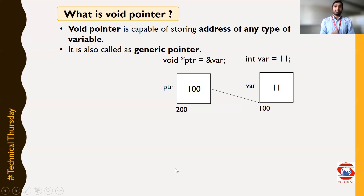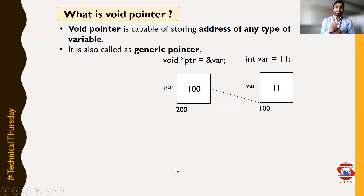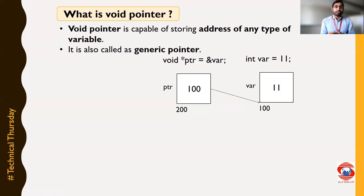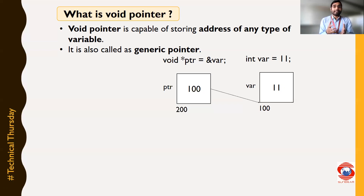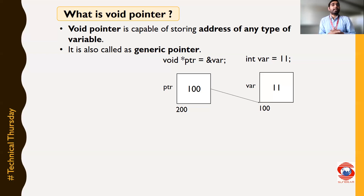But here there is one difference. In the previous case, it is an integer pointer. But in this case, it is a void pointer. Inside the void pointer, we are storing the address of an integer type variable. That's why these void pointers are also called generic pointers, because they can store the address of any type of variable.